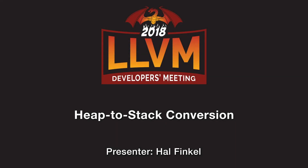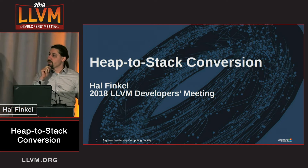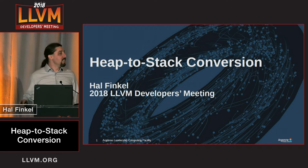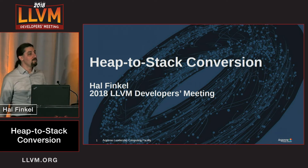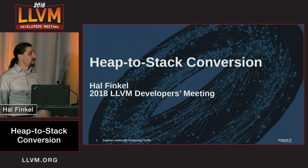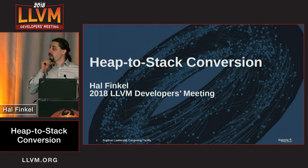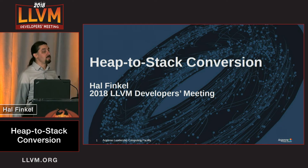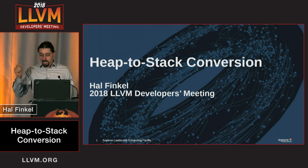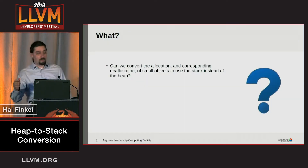This is a lightning talk about heap-to-stack conversion, which is a really interesting story because it involves how the compiler magically fixes people's bad code. It also involves undefined behavior — and everyone who likes C and C++ loves undefined behavior. It's a nice story about how the compiler can use the lack of undefined behavior to optimize your code. I'll try and talk to you about this for the next four minutes and ten seconds.